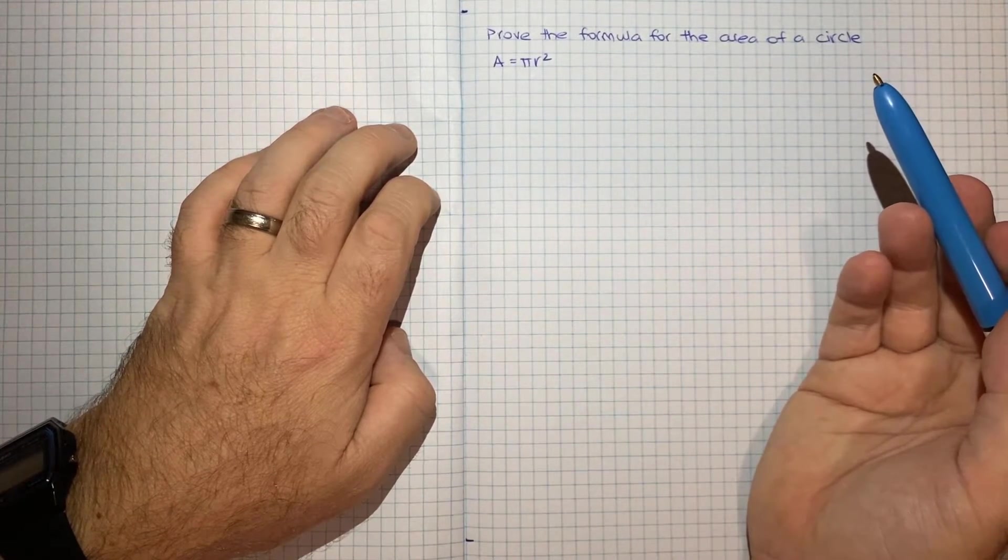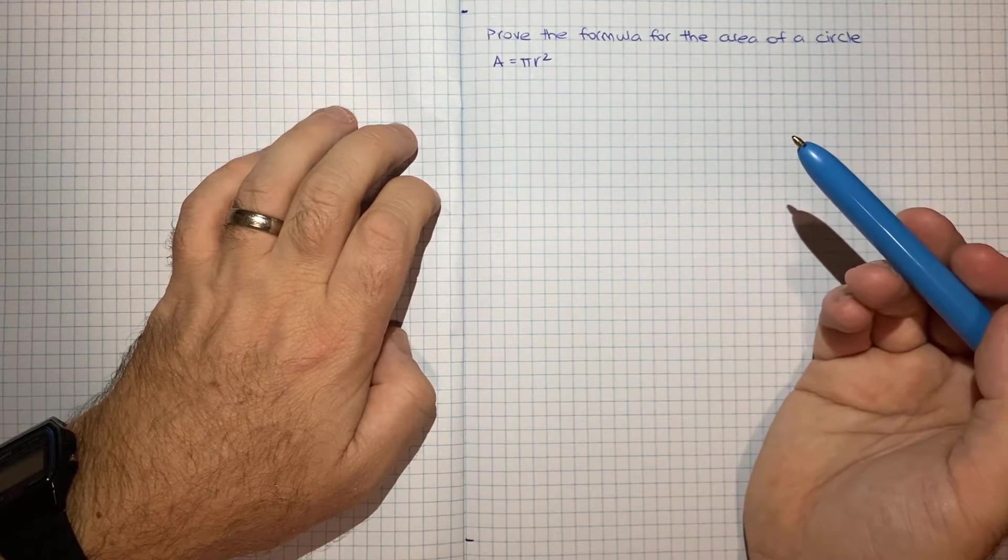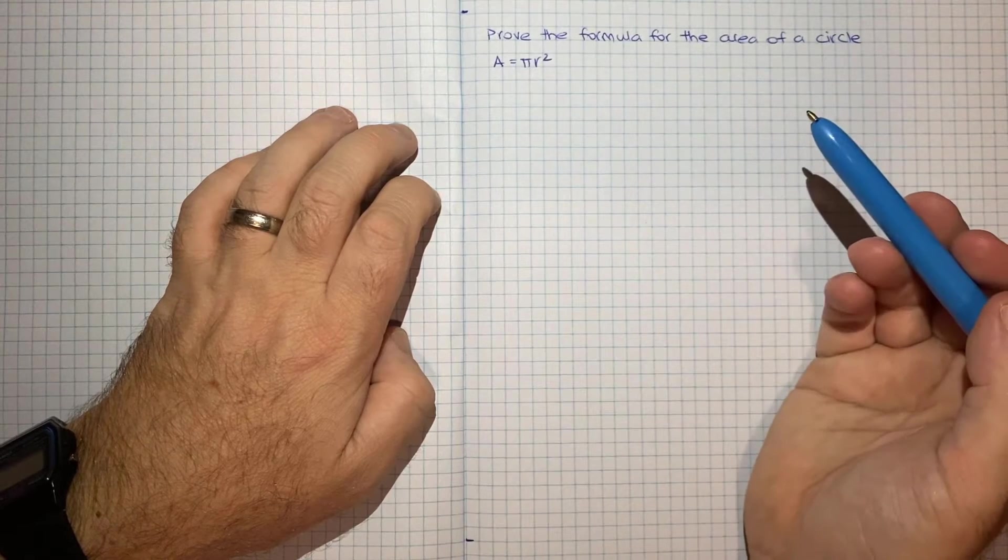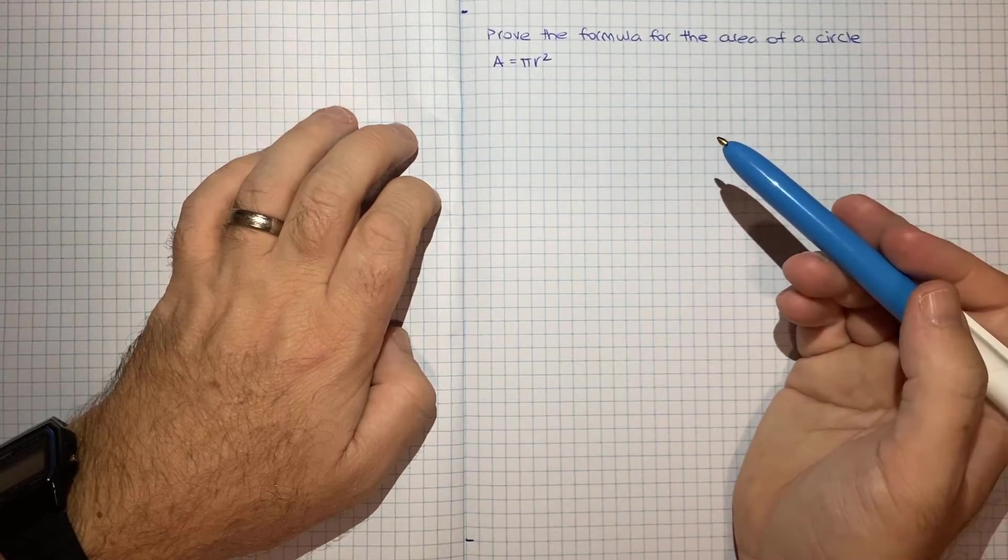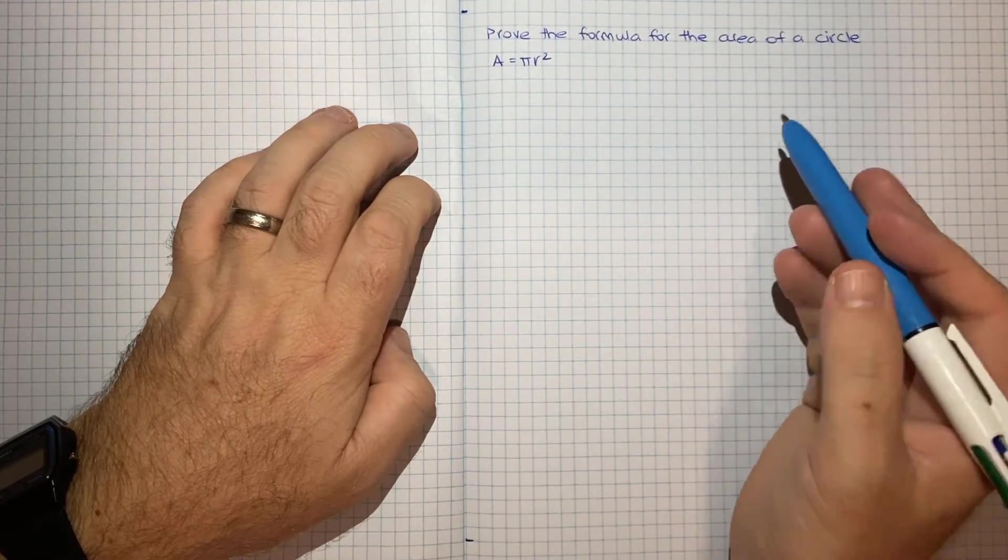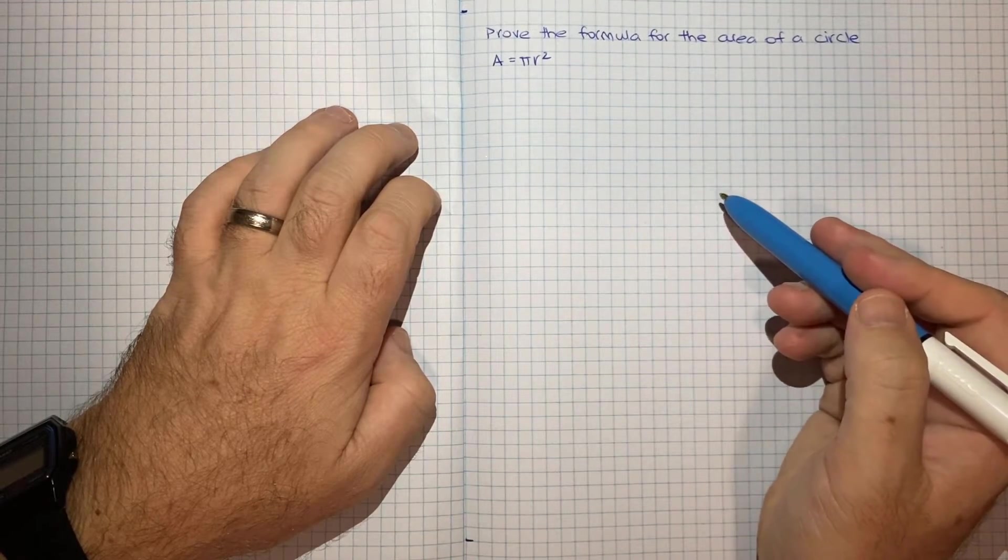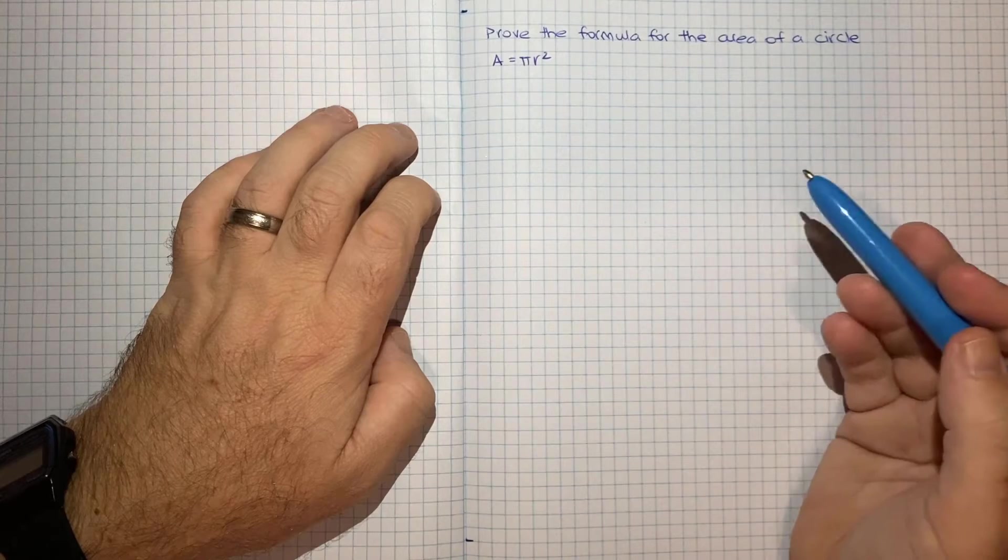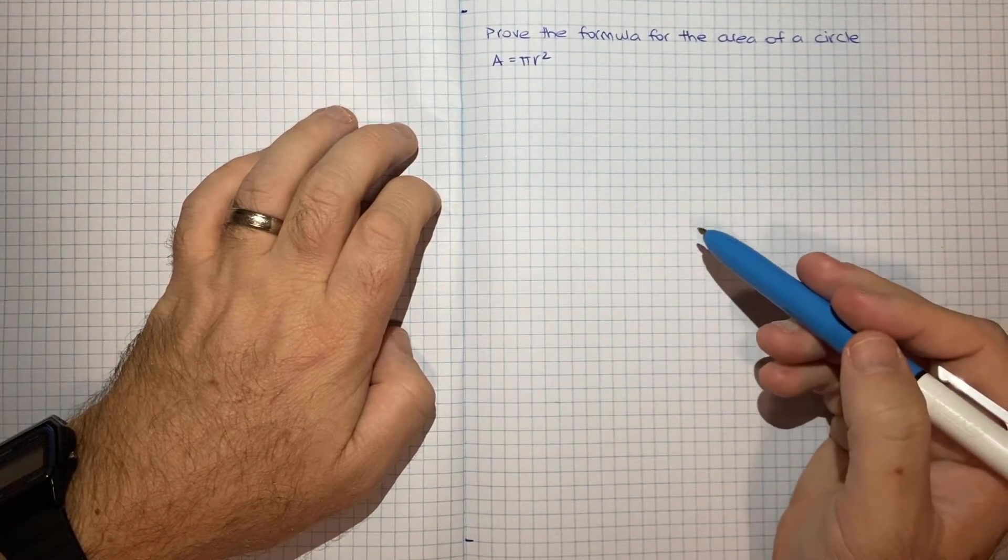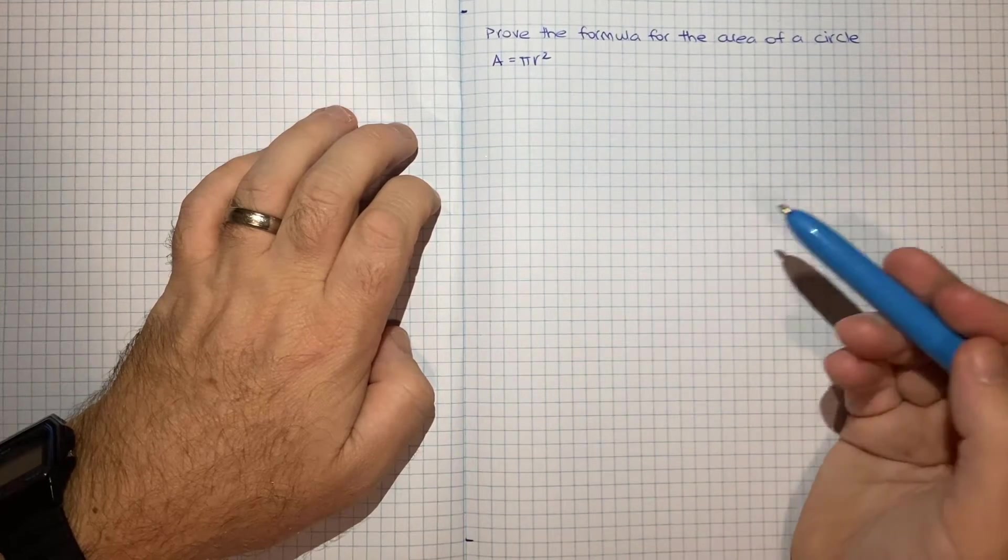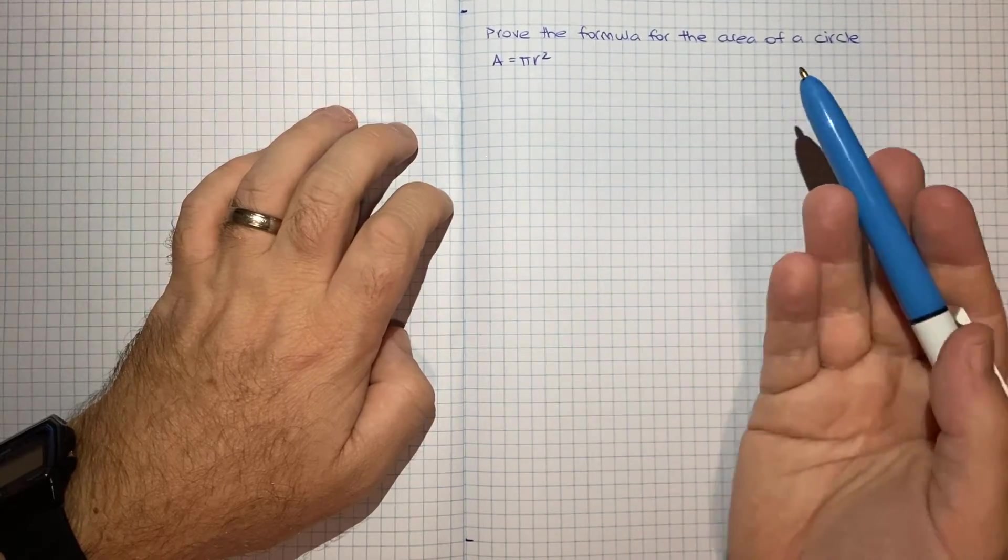The way I came across this proof was I've been working on a lesson plan to teach how to calculate the volume of a cylinder as part of an assignment for my Master of Teaching program. And in general, when you're working out volumes of any kind of prism, the basic idea is that you take the area of the base and multiply by the height. So with a cylinder, the base is a circle. So naturally, to be able to teach the volume of a cylinder, you need to first make sure students understand the area of a circle. So that's kind of why I was looking into that.